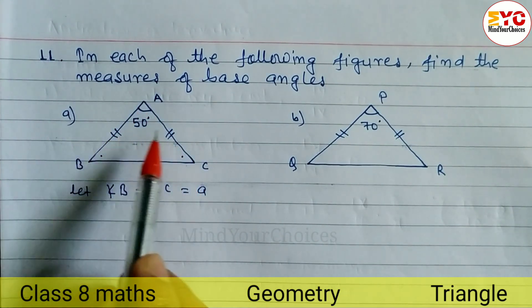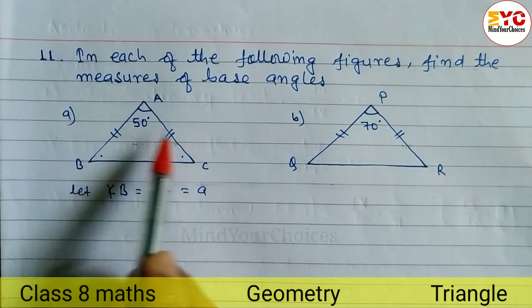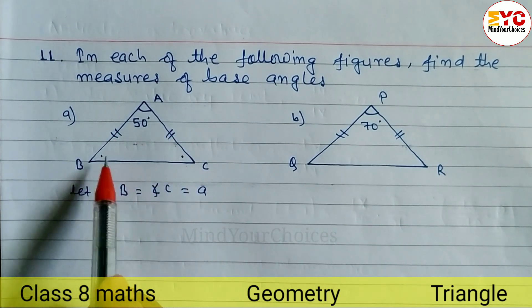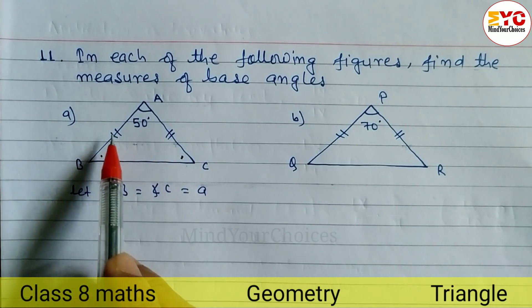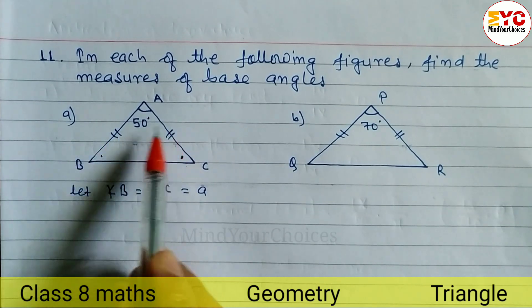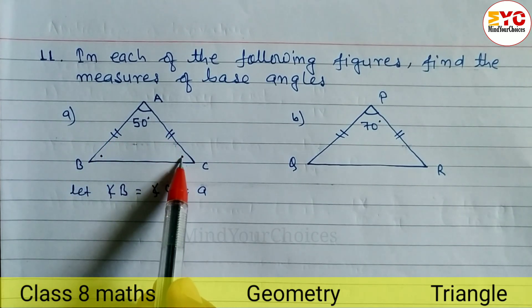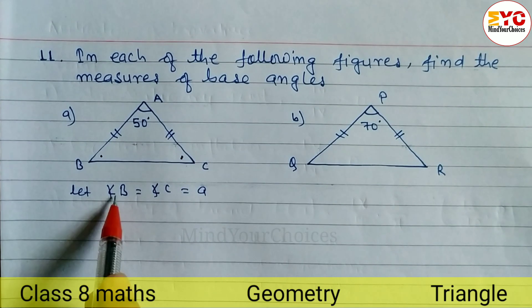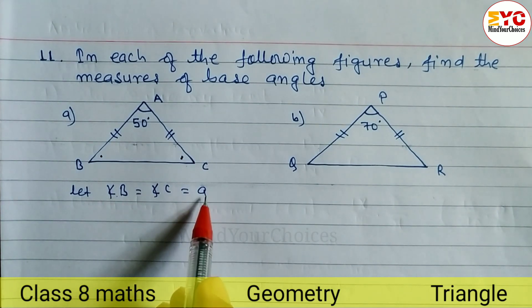Why? Because AB and AC, two sides are equal, and we have to find out the base angle. These two angles we have to find out. We know that when it is an isosceles triangle, then base angles are also equal. So we can let angle B equal to angle C equal to A.